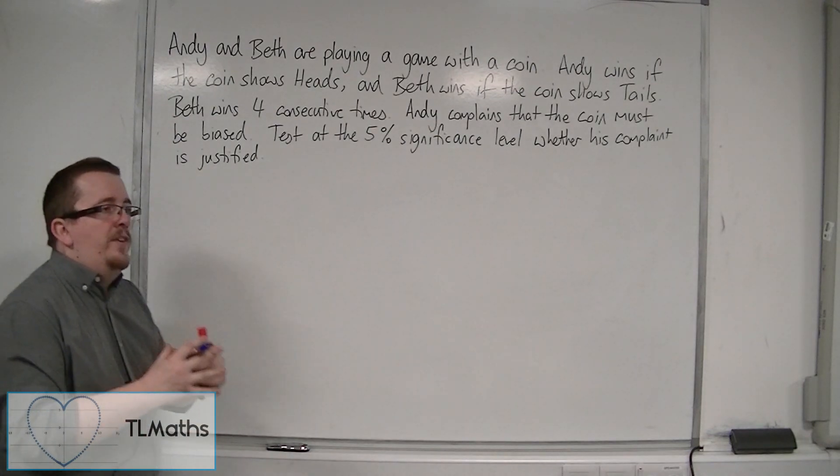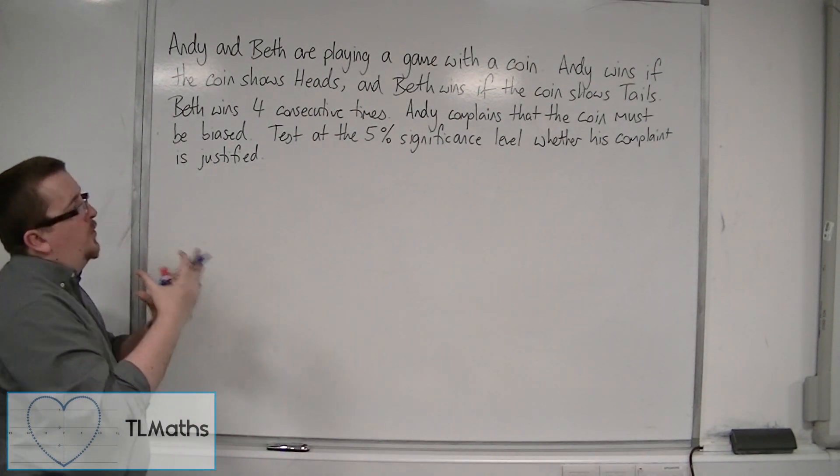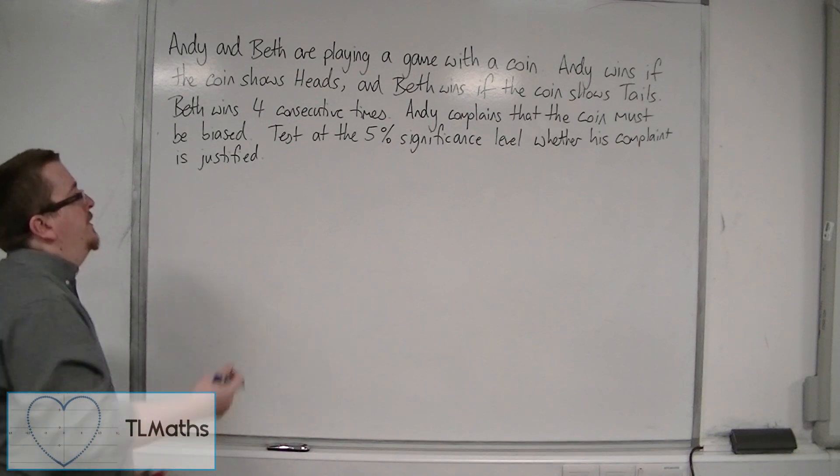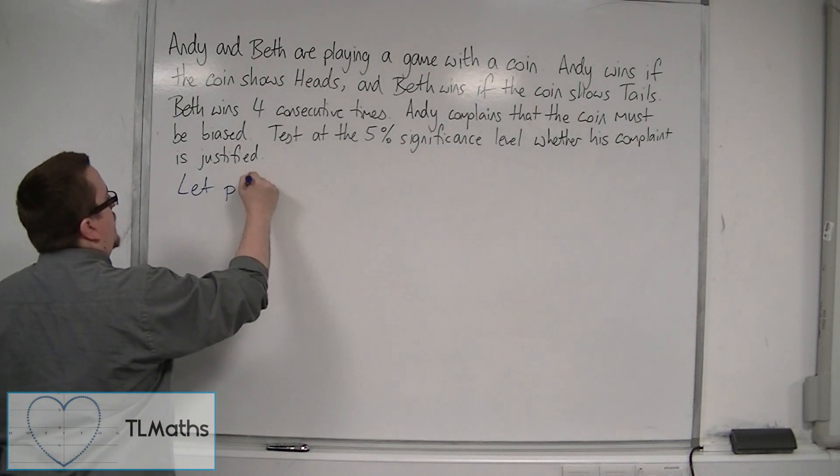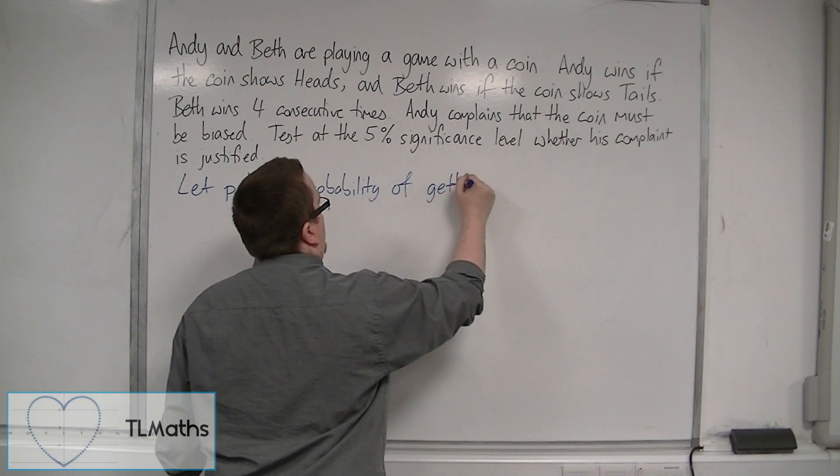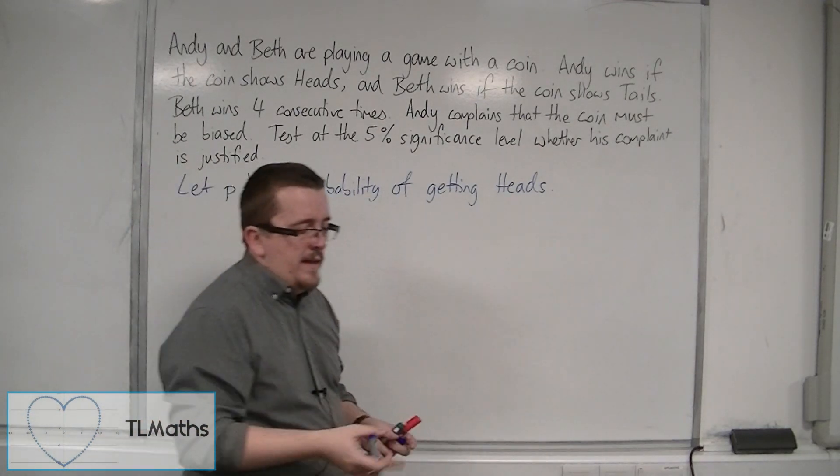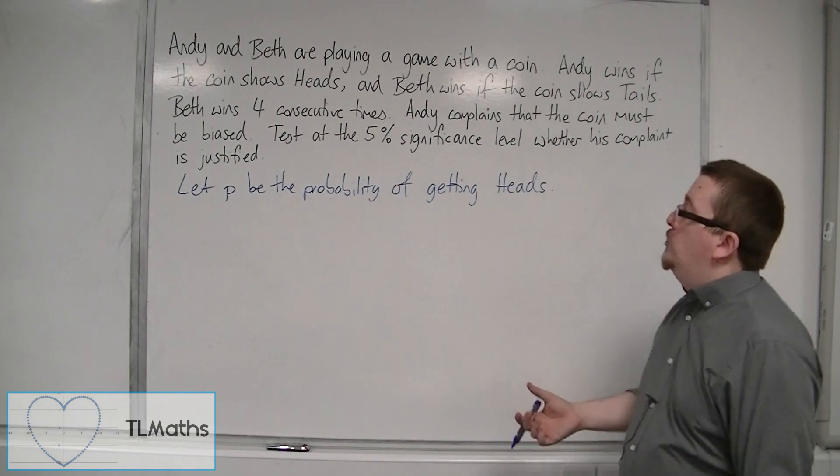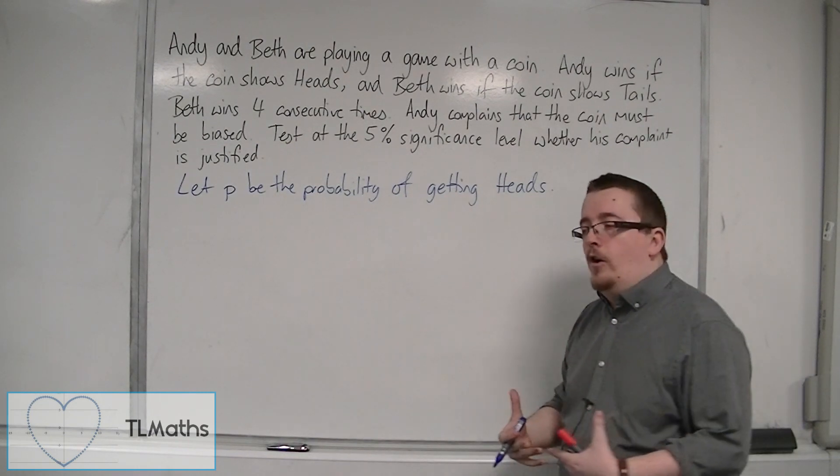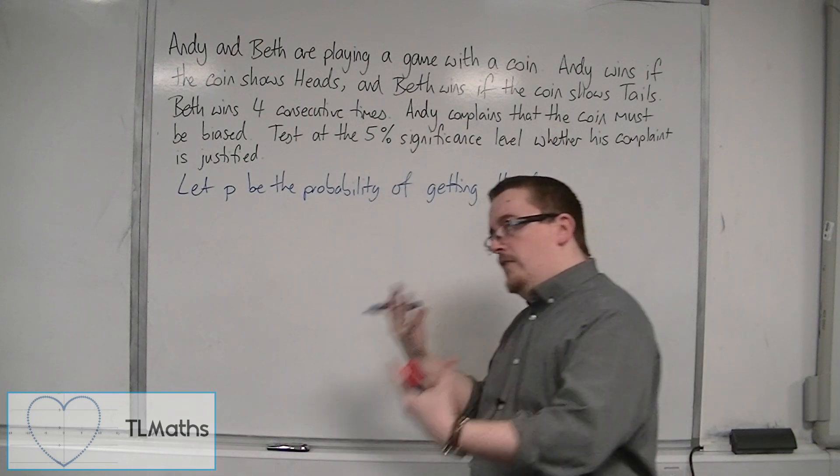First of all, what we do is we want to set up the situation, and we need to first determine what we're going to call P. P being the probability. So let P be the probability of getting heads. Now, I appear to have some freedom here, because I can choose to either look at the situation from Andy's point of view, so I'm letting P be the probability of getting heads, or I can look at the probability from Beth's point of view and look at the probability of getting tails. But I've gone for this way.